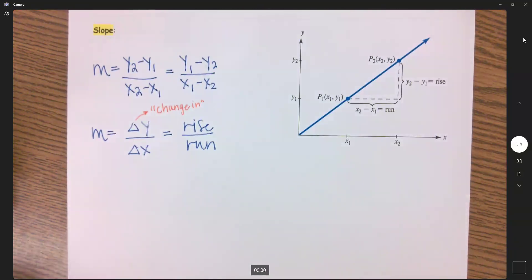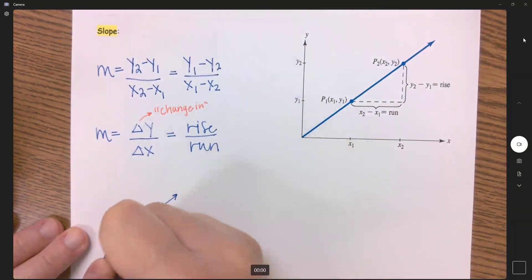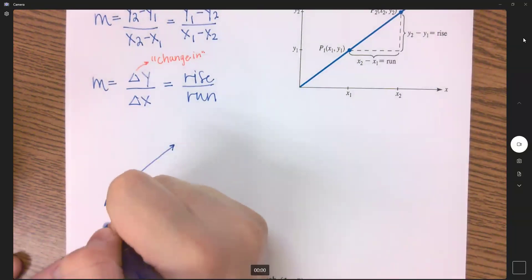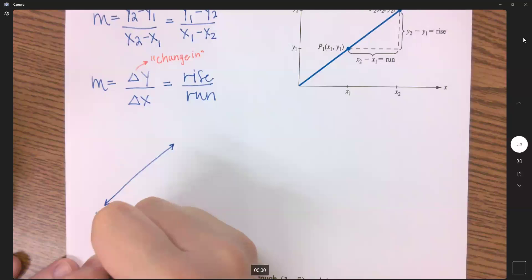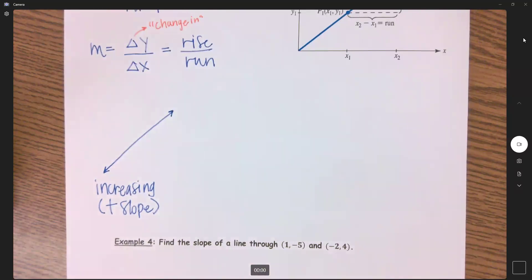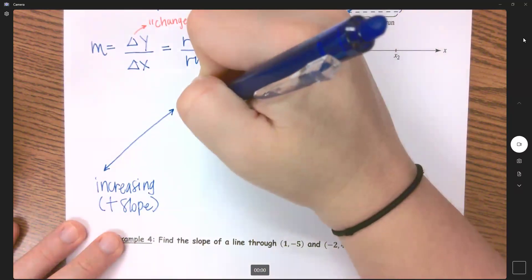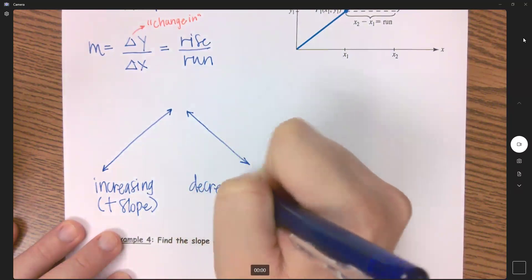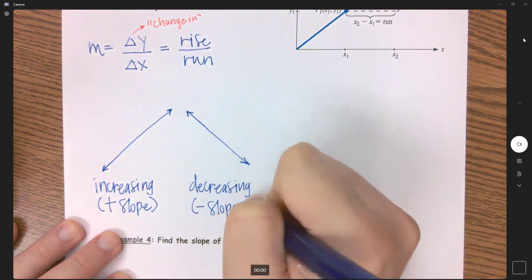We've got different types of slope here. So the first type I have is if my line is increasing from left to right, then this is an increasing slope. And increasing slopes always have a positive slope. So then opposite, if it is going down from left to right, then we have a decreasing slope. And decreasing slopes are always negative slopes.